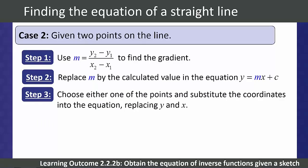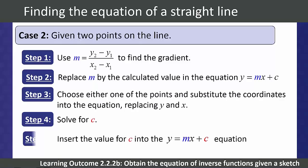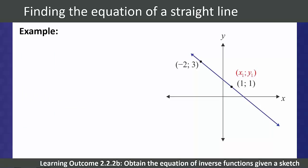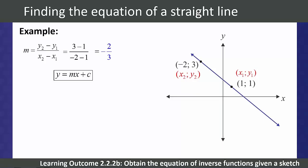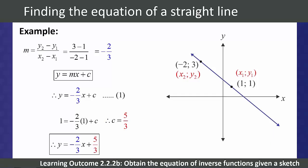We choose either one of the points to substitute the x and y coordinates into the equation to solve for c, then substitute our calculated c. Using the point (1, 1) as x1, y1 and (-2, 3) as x2, y2, we substitute into the gradient formula and find m equals negative 2 divided by 3. Substituting m into y equals mx plus c and using point (1, 1), we get c equals 5 divided by 3, giving the equation y equals negative 2/3 x plus 5/3.